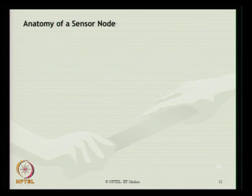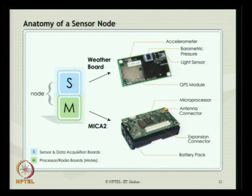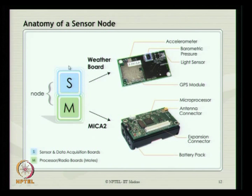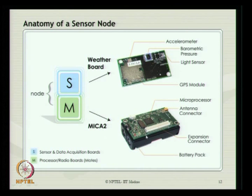Looking at the anatomy of a sensor node, it has two basic configurations: one called an S node and the other called an M node. The S node is essentially for sensor and data acquisition, whereas the M node is for processing or radio boards, connecting the motes. The S board generally contains the weather board, which has a tiny accelerometer, a barometric pressure sensor, and a light sensor. The M node, which is the MicaZ configuration, contains the microprocessor, antenna connector, and expandable connector to which further data acquisition systems can be connected, and comes with a self-powered battery pack.